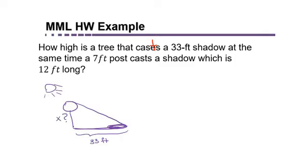At the same time there is a 7-foot post and the sun is shining on it at the same angle and it casts a shadow of 12 feet.